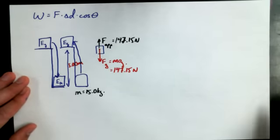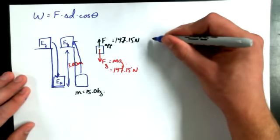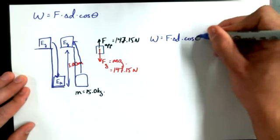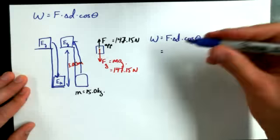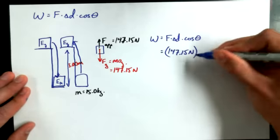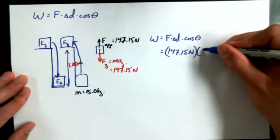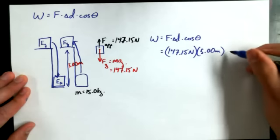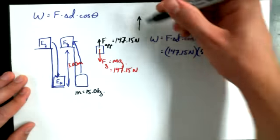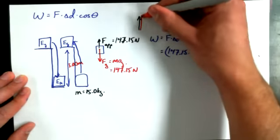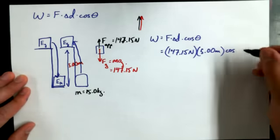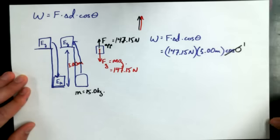So when I go to calculate how much work is done, I'm going to say the work done by a lifter here would be equal to force times displacement times cosine theta. And the applied force by a lifter would be 147.15 newtons. The displacement, according to our diagram, would be 5.00 meters. What about this theta? Remember, I got a displacement that's upwards, and I have an applied force that's also upwards. What's the angle between those two vectors? Yeah? The angle is 0. And the cosine of 0 is 1. Every single time.